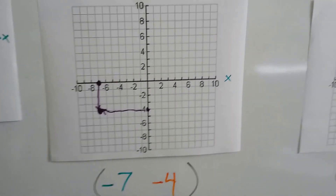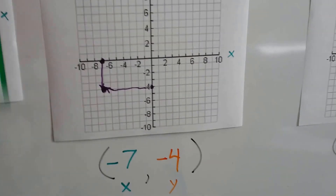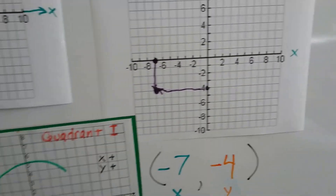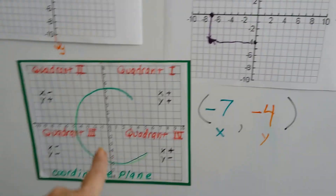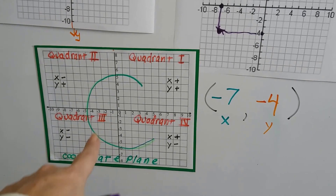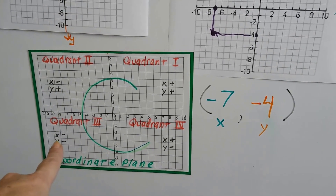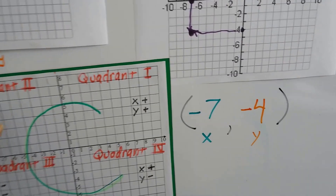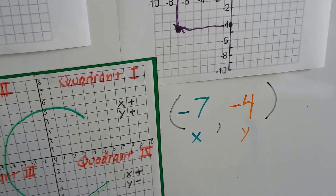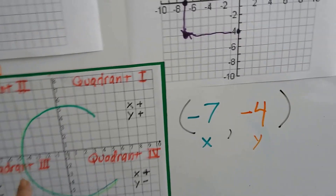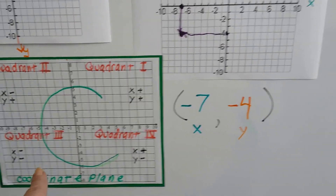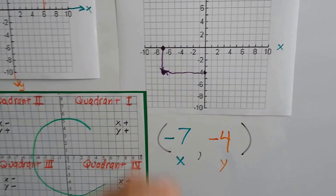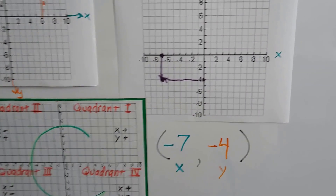Do you see what quadrant that is? Remember, we count them going around like the shape of a C. That's quadrant 3, written in Roman numerals — it's a negative x and a negative y. That's the bottom left-hand corner.